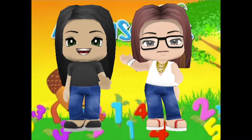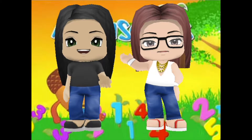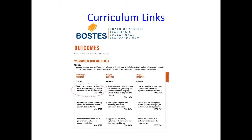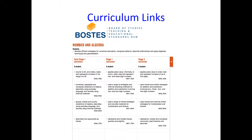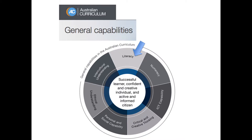Tailored for Early Stage 1, MathSeeds covers two of the three working mathematically outcomes and the number and algebra strand, focusing on whole number, addition and subtraction, and multiplication and division. From a general capabilities perspective, it encompasses elements from literacy, numeracy and ICT capabilities.